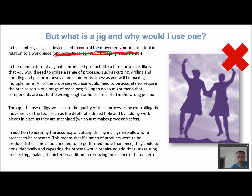If we're going to make a batch-produced product — in this question a bird table, but it could be virtually anything — you're likely to do lots of operations: cutting, drilling, abrading, or sanding. With multiple parts you'll do the same action more than once, multiplied by the batch quantity. Everything you make needs to be accurate, so machines like drills and saws must be set up correctly, otherwise components get cut to the wrong length or holes drilled in the wrong position.